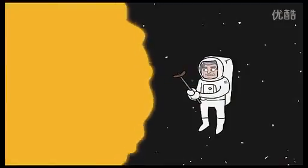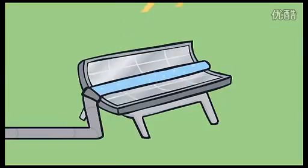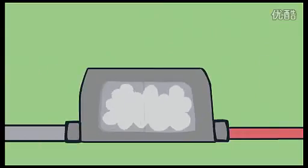Another way to capture the sun's energy is by capturing its heat. Solar thermal electric power plants generate electricity by concentrating solar energy to boil water, which then produces steam.